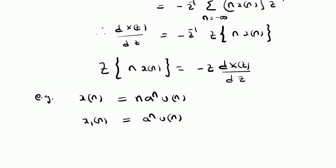We already know that the Z transform of a power n times u of n, that is X1 of Z, is given by 1 divided by 1 minus a times Z inverse, where the ROC is given by mod Z greater than mod a. This is the Z transform of X1 of n.